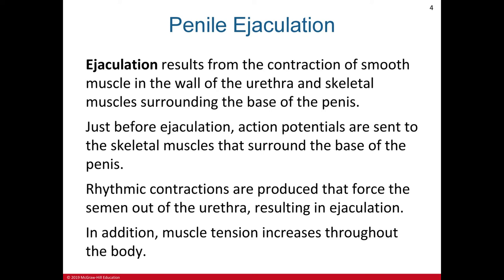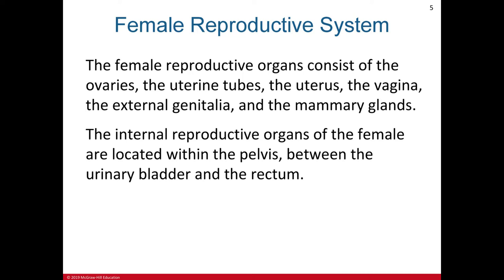The smooth muscle is controlled by parasympathetic action potentials, while the skeletal muscle surrounding the base of the penis is controlled by sympathetic action potentials. Just before ejaculation, action potentials are sent to the skeletal muscle at the base of the penis, producing rhythmic contractions that force semen out of the urethra. Muscle tension also increases throughout the body. The last stage is resolution, where the penis becomes flaccid and an overall feeling of satisfaction exists.